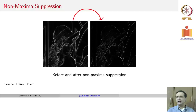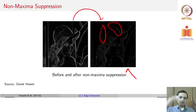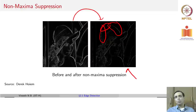After applying non-maximal suppression, the edges have fairly thinned out and are well localized where the edge should be, rather than having very thick edges. But we are not done yet — one more problem is that there are many discontinuities. We would ideally want the hat on her head to be one large edge, but there seem to be multiple pieces with gaps in between where we would have expected an edge.